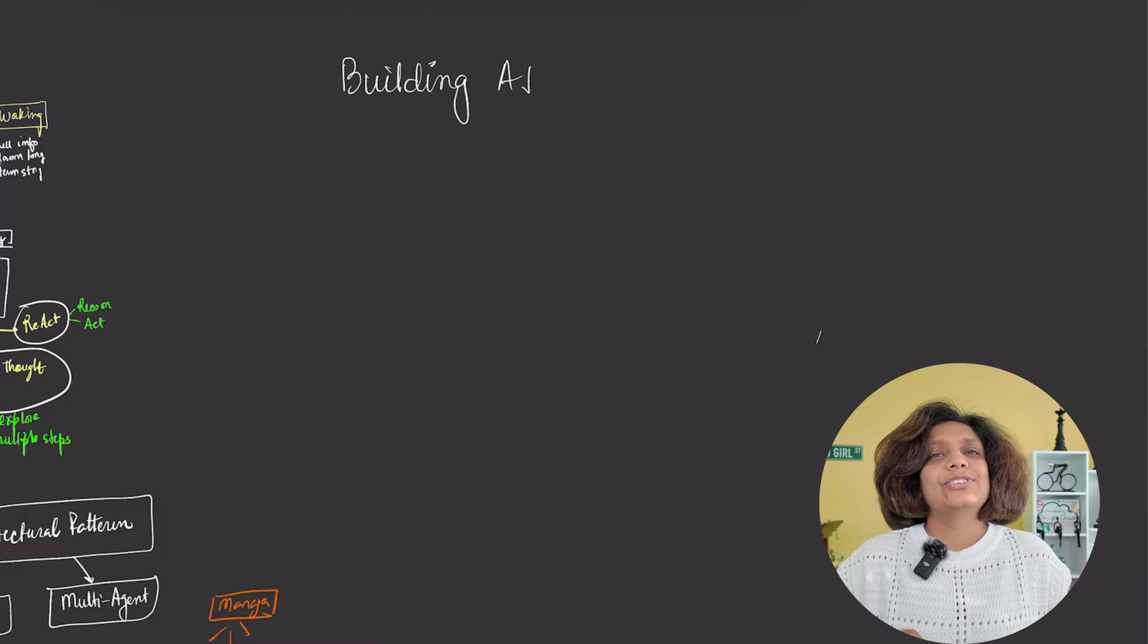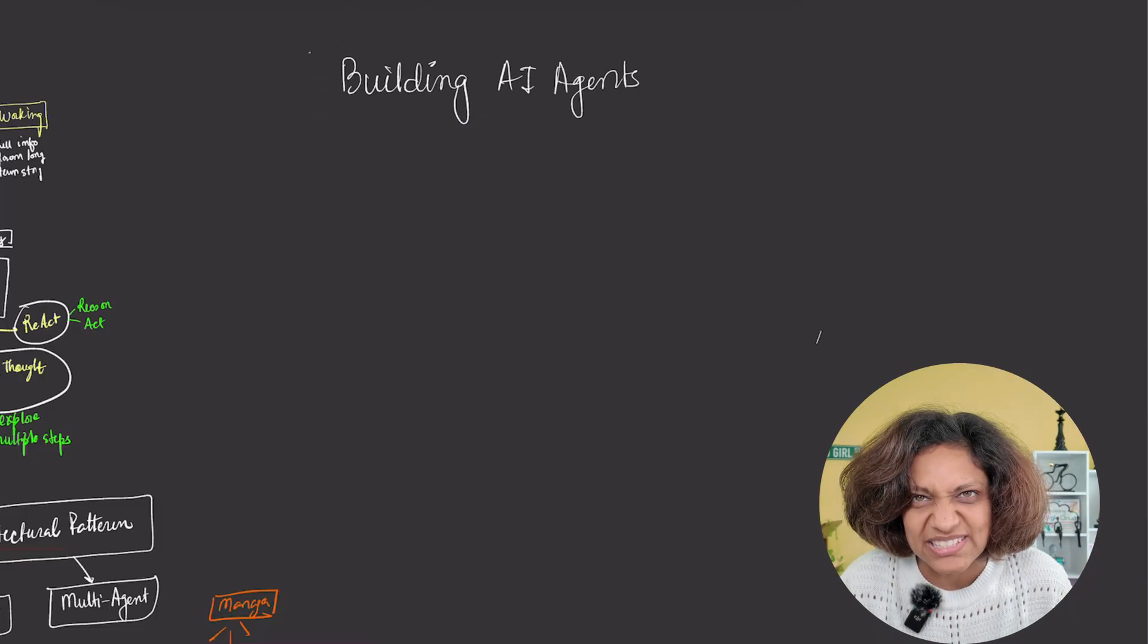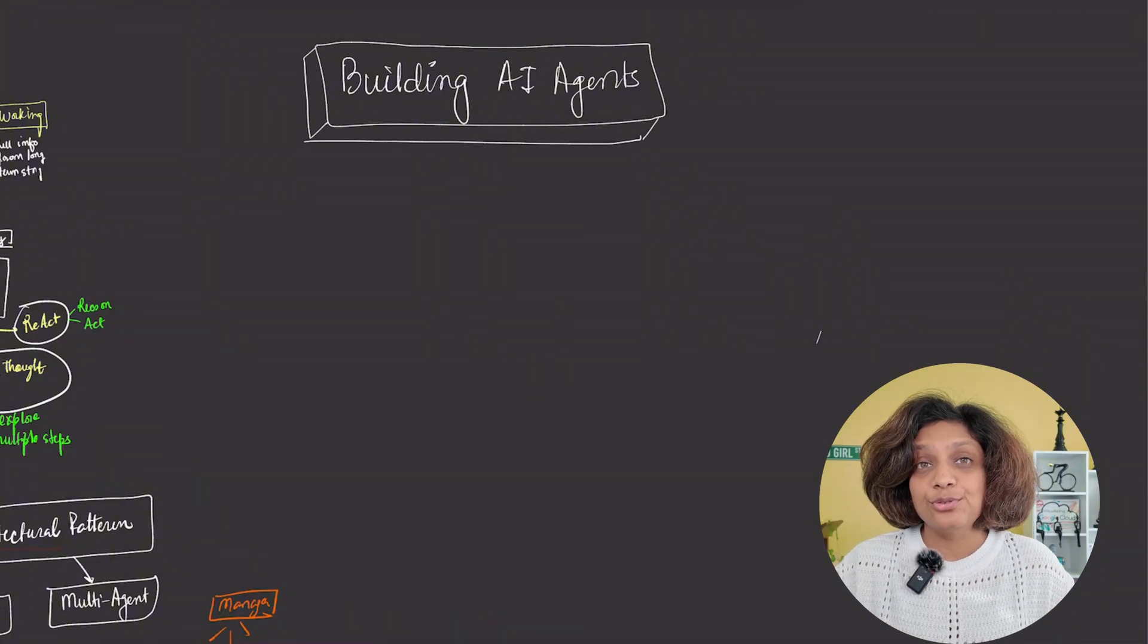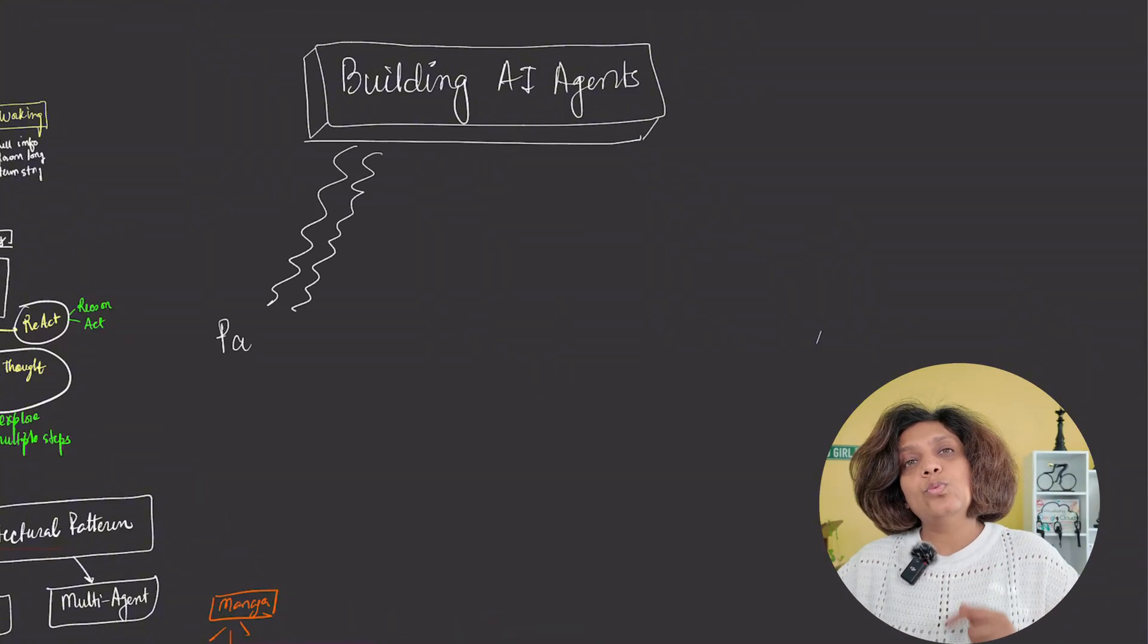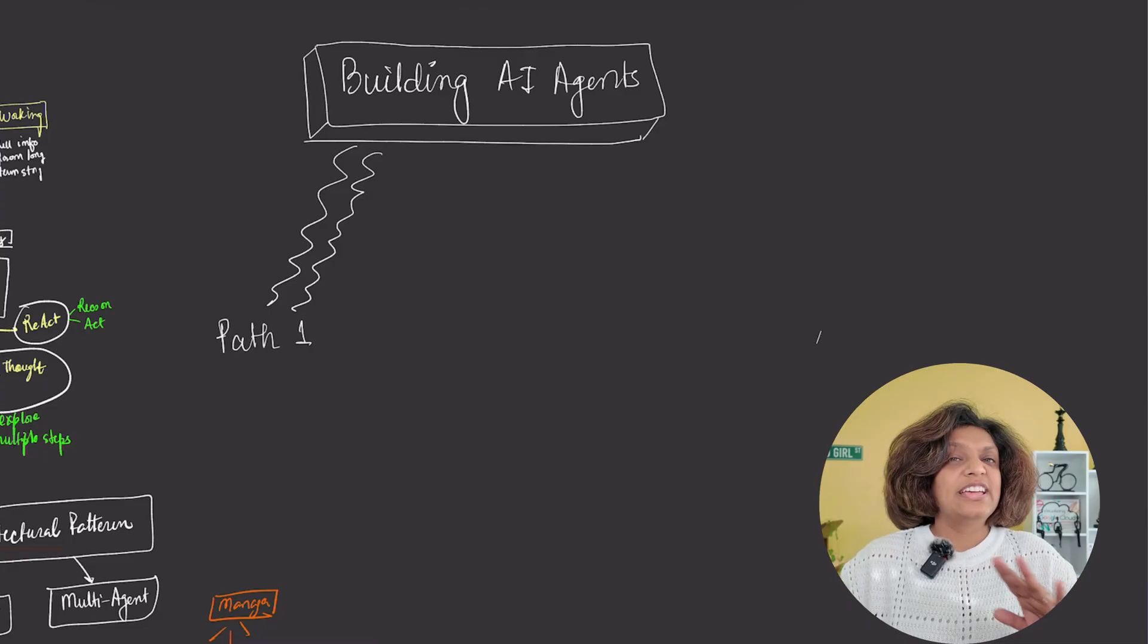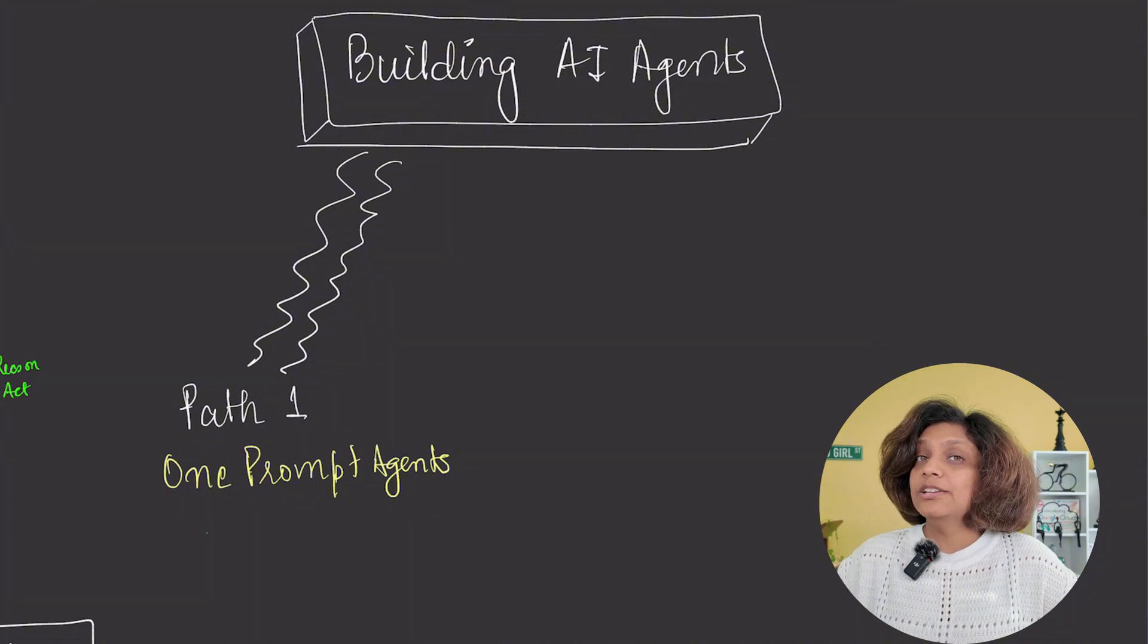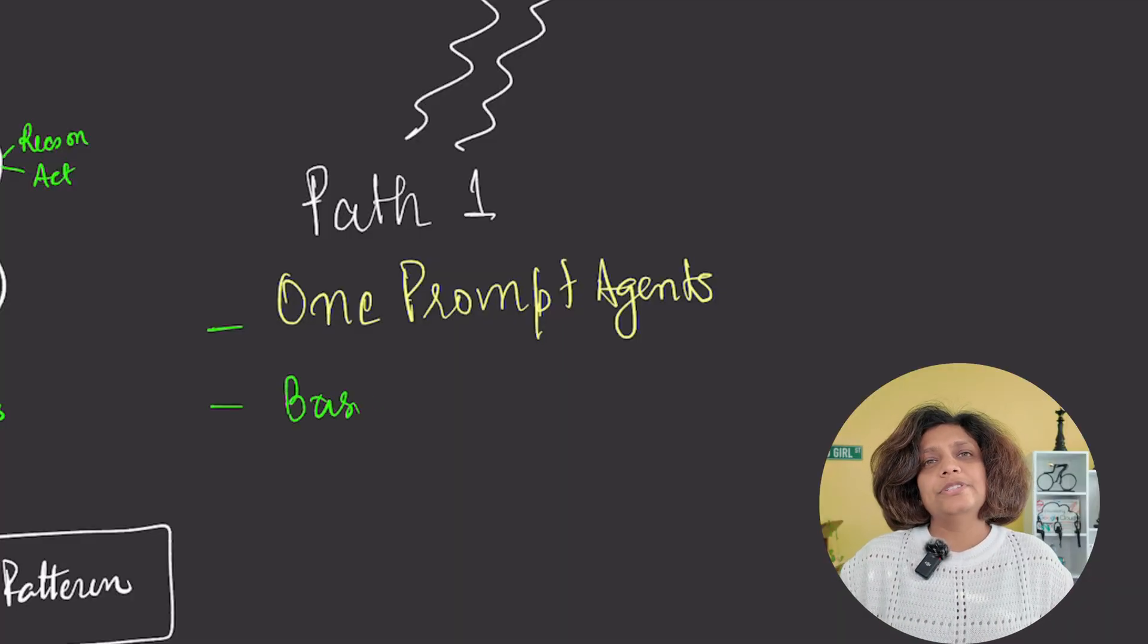How do you actually start building AI agents? You have four main paths depending on your goals and technical skills. Path one is one prompt agents. This is the easiest entry point. You craft a single, well-designed prompt to guide the language model's behavior for a straightforward task. Generating reports, answering questions, booking tickets, analyzing simple data. This requires just basic prompt engineering skills. No coding necessary. An example could be including tools like Manners, Operator, and Perplexity.